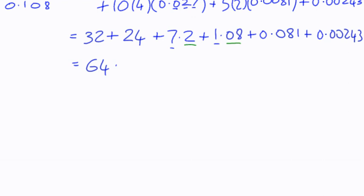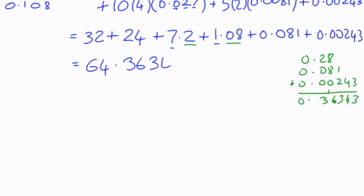And then if we add up our decimals, we've got 0.2, 0.28, 0.081, and 0.00243. If we add up all of them, we get 0.36343. So my answer is 64.36343.